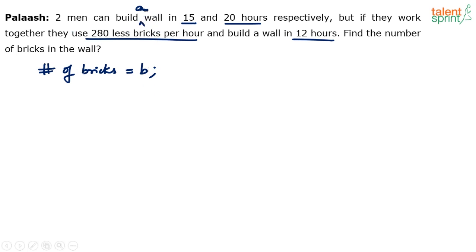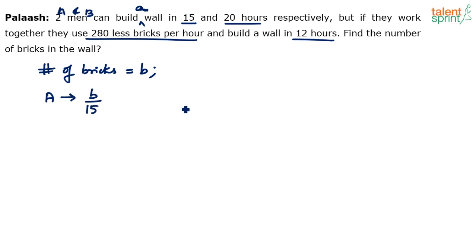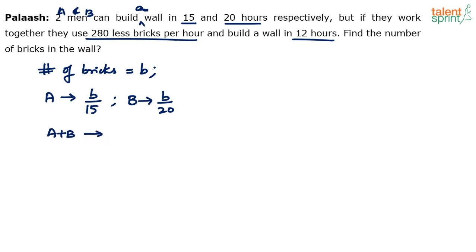If the first person takes 15 hours, let's call the two persons A and B. A uses a total of B bricks and takes 15 hours, so bricks per hour for A is B/15. Similarly, B's capacity is 1/20, so bricks per hour for B is B/20. When both A and B work together and finish in 12 hours, they use B/12 bricks per hour.